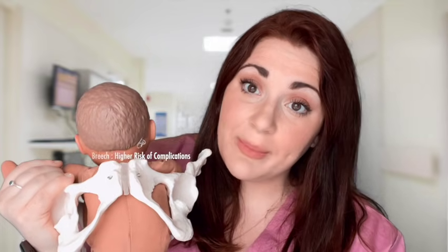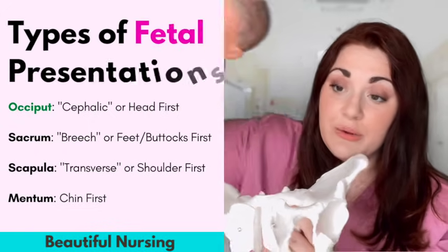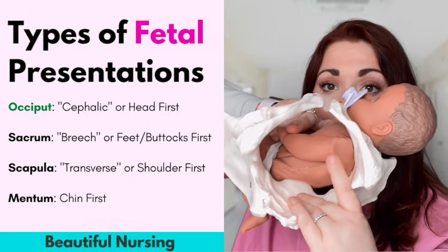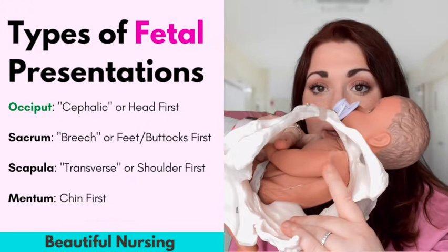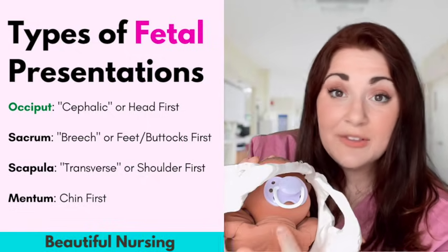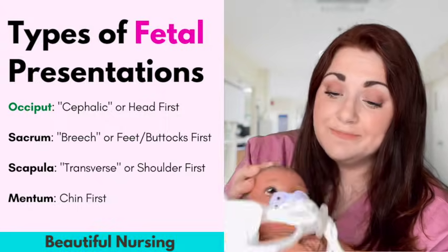Breech bad — remember the B's? Breech bad. The next way that Gina could present to the world is scapula, so shoulder first — the first thing you'd see is her shoulder. Mentum means the first thing coming through that pelvis is chin first. So again, fetal presentation is just which way Gina is going to present to the world first.